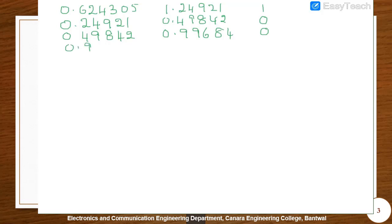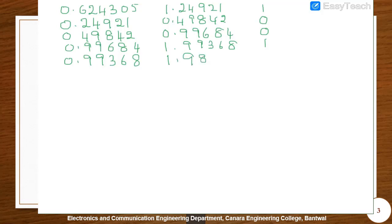Continuing: 0.99684 multiplied by 2 gives 1.99368. Since it is greater than 1, the bit is 1. Subtract 1 to get 0.99368. Multiply by 2: 1.98736, greater than 1, bit is 1. Subtract 1 to get 0.98736. Multiply by 2: 1.97472, greater than 1. Continuing the table: 0.97472 times 2 gives 1.94944, carry is 1; remainder is 0.94944, times 2 gives 1.89888, carry is 1.